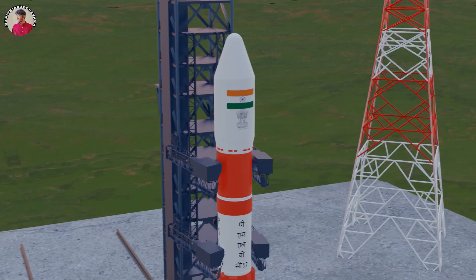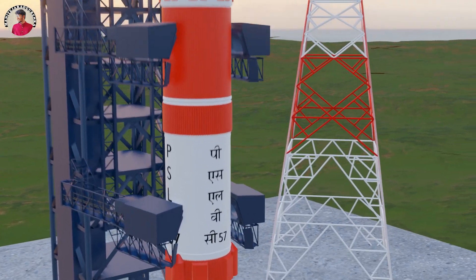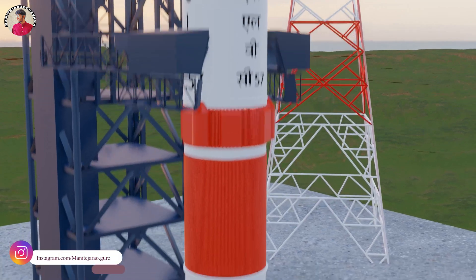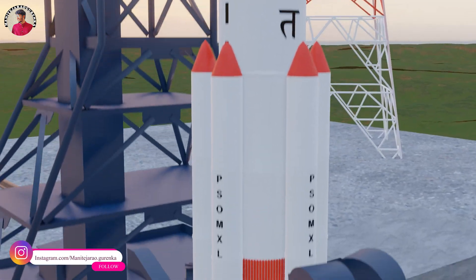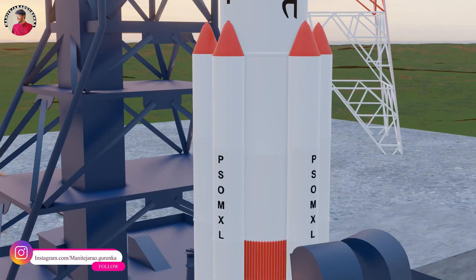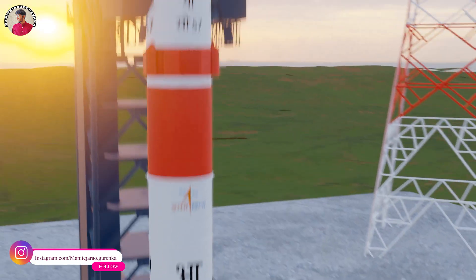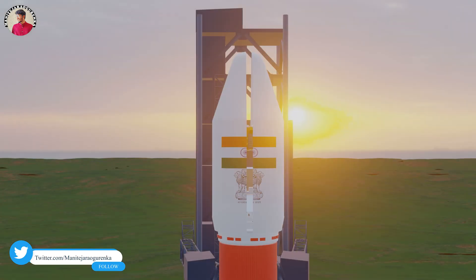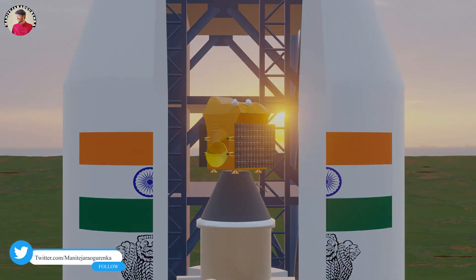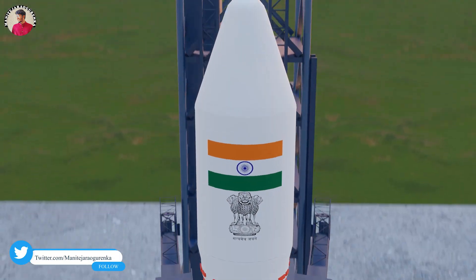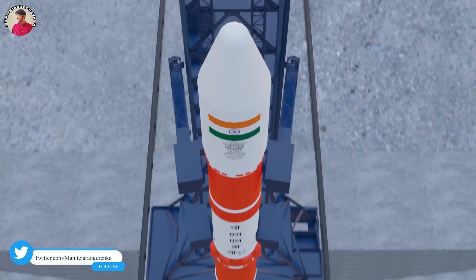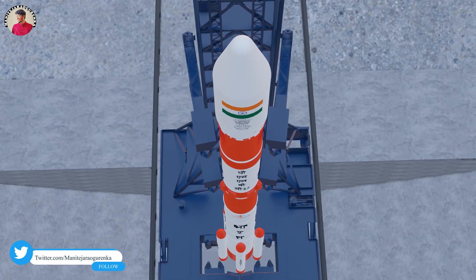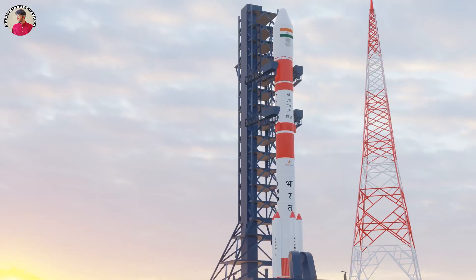Aditya L1 would be launched using PSLV C57 rocket, which uses PSOM hexa boosters. This booster can lift up to 320 tons of weight. In the payload fairing of the PSLV, the Aditya L1 satellite is placed. The PSLV undergoes four stages of ignition, with a total of four powerful engines used in it.